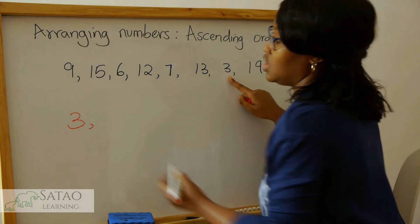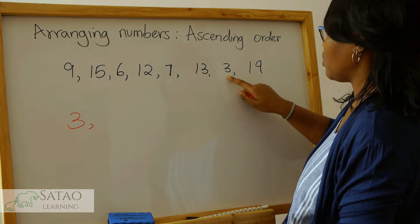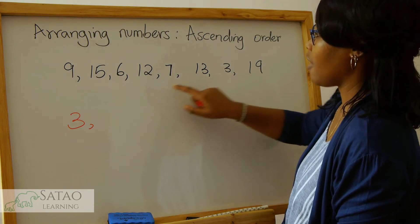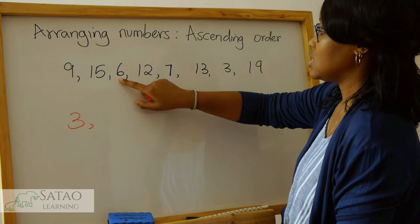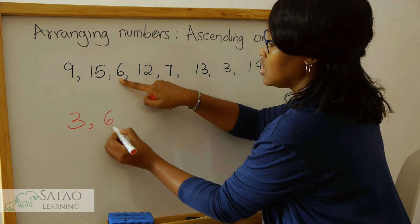So we start with 3 because in this case it's the smallest number. Next, which number will be next? 4 not there, 5 not there, 6 is here.